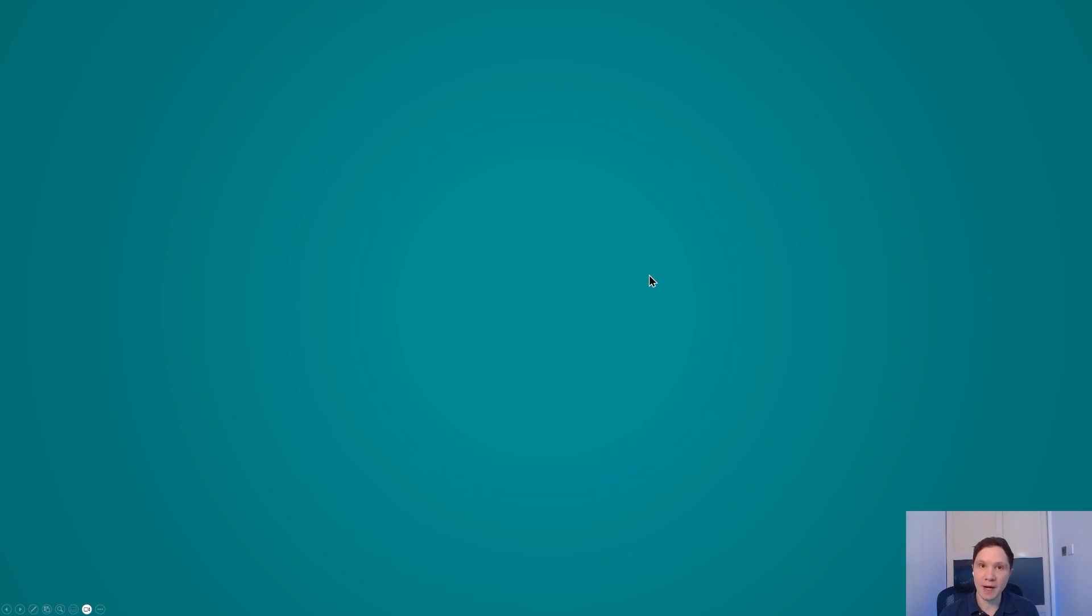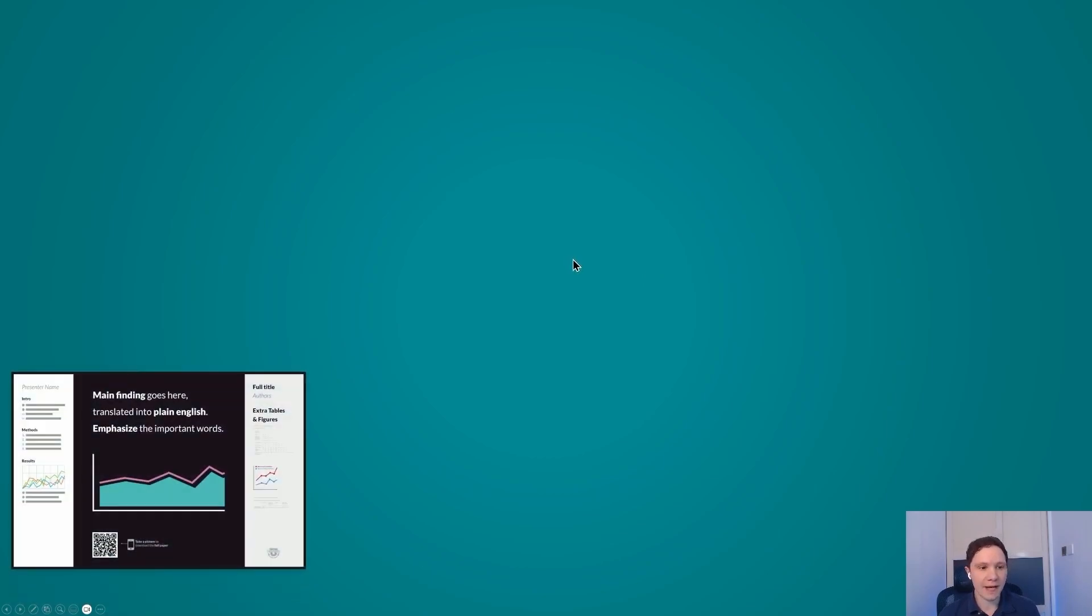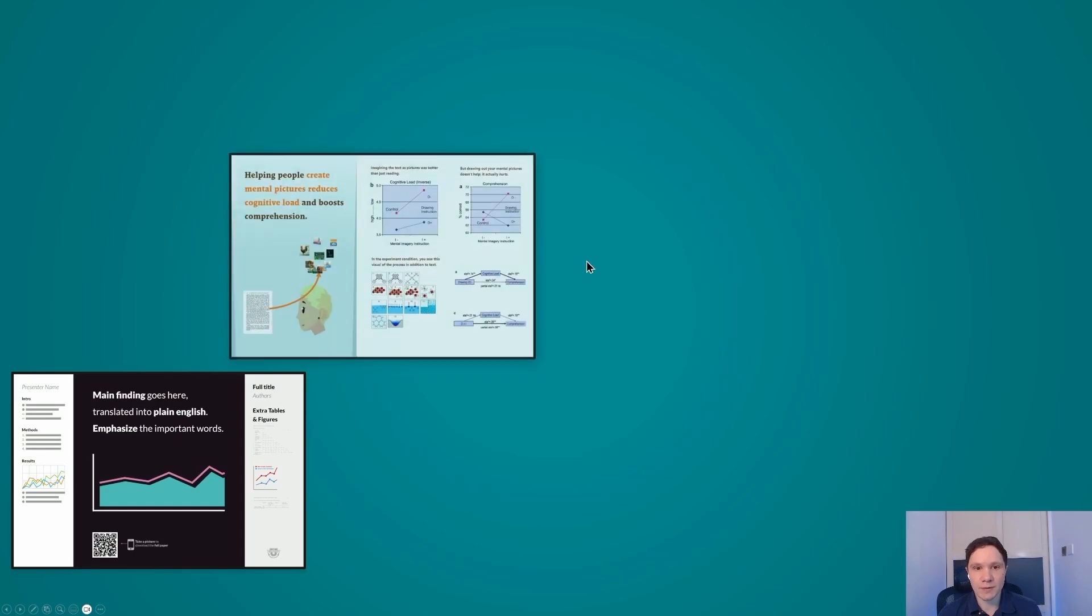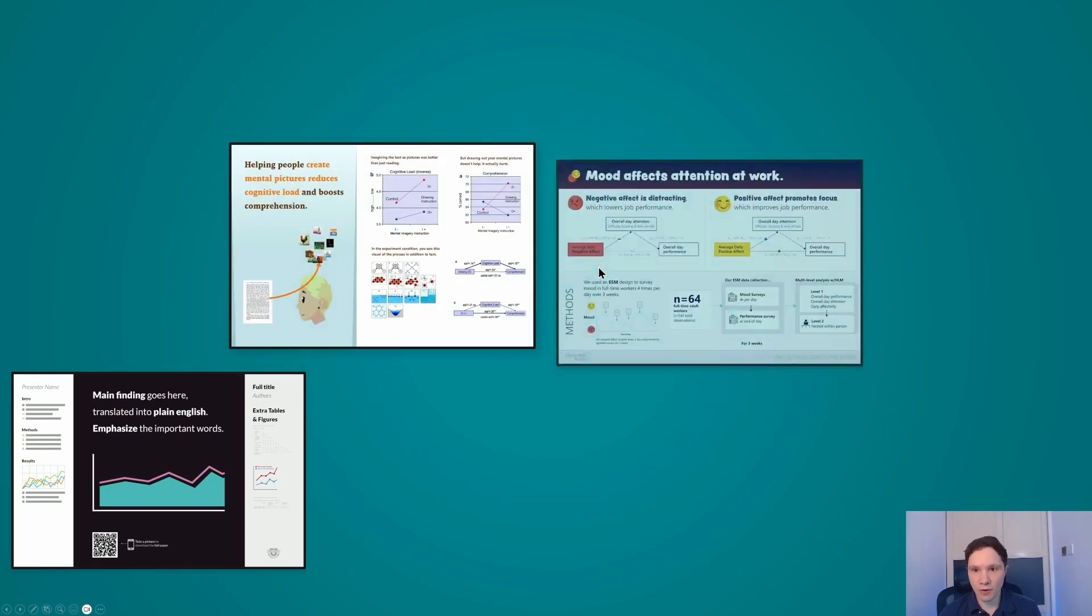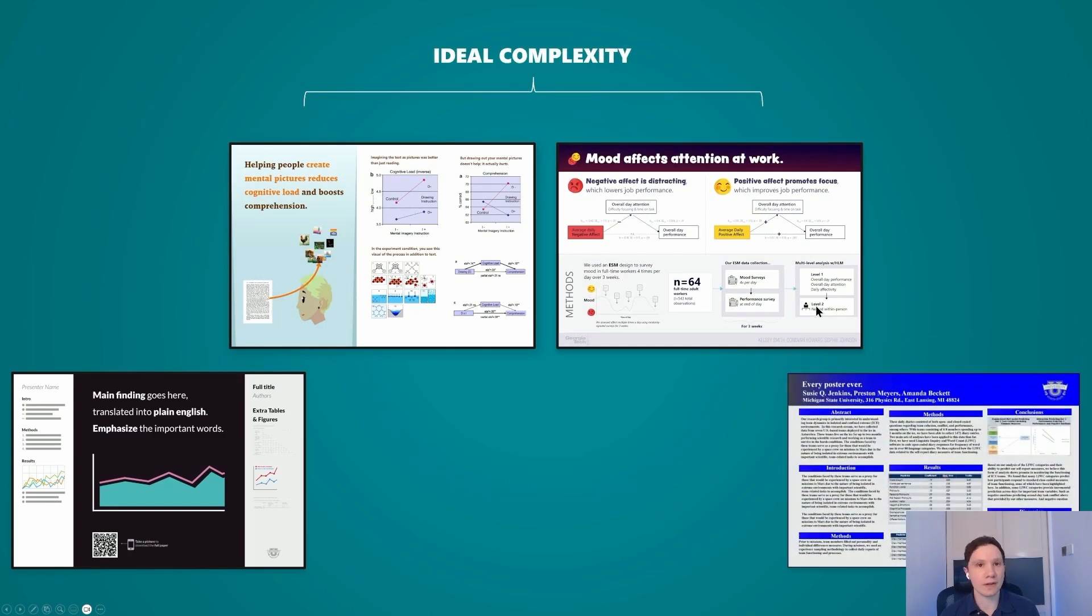So you can see this reflected in how I updated the better poster layouts. That first original billboard style poster layout felt too simple for some people. And I tried to make it too simple kind of on purpose because I wanted to see what we were missing. But you can see in these later better poster layouts that they include more graphs and figures, include a little bit more complexity. They approach more of that ideal level of complexity without getting too cluttered like the wall of text.